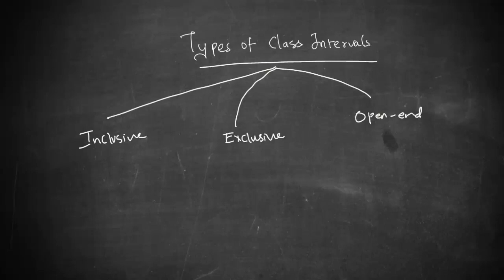So, what is this inclusive method? When you have class intervals wherein your upper limit in one class interval is the lower limit for the next class interval, then that method is called the inclusive method of classification. Let us see how it will look like.